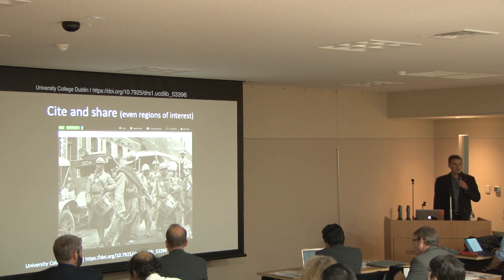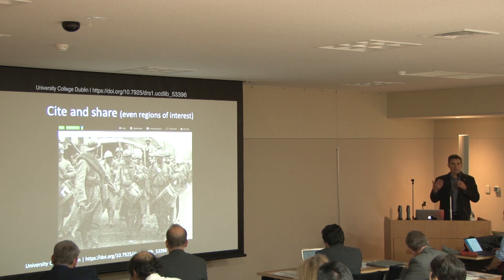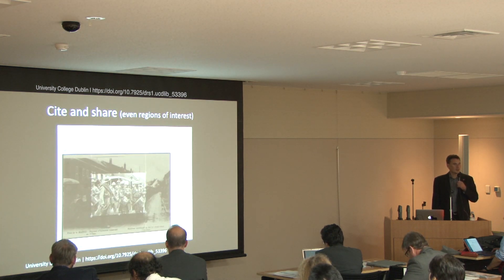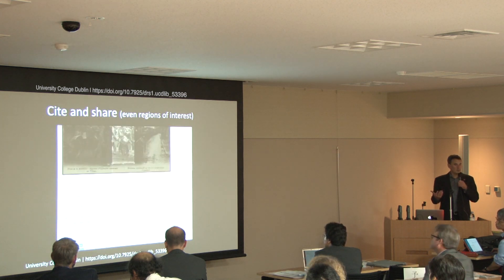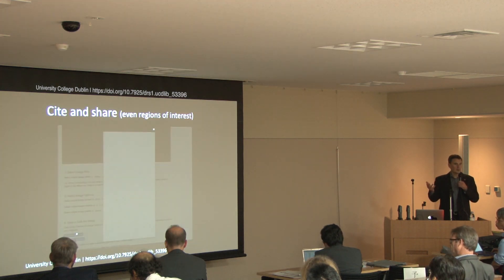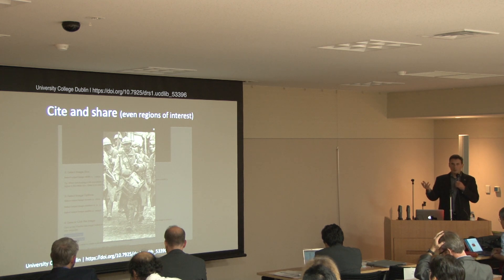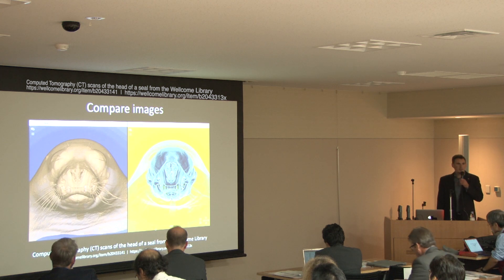When researchers use information on the web, they often need to cite and share it. With IIIF you can cite and share images including regions of interest. This is an example from University College Dublin, which uses IIIF to display a full image, identify a region of interest — in this case the drummer — and through capturing just the coordinates, produce a separate resource related to the original file that highlights that region of interest.